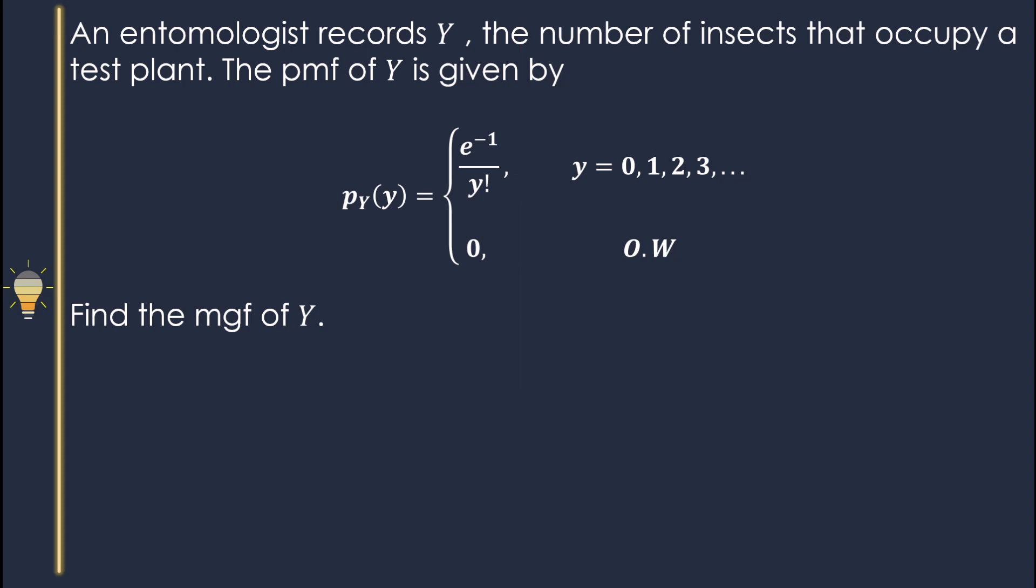In this problem, the probability mass function of Y is given. This is a discrete random variable. Y values are going from zero to infinity. Find the moment generating function of Y.